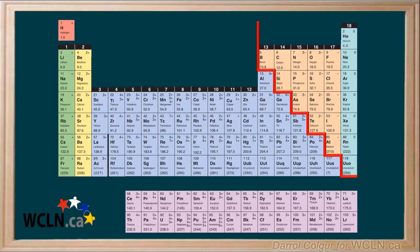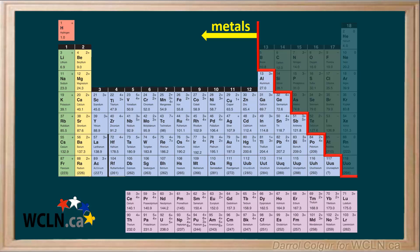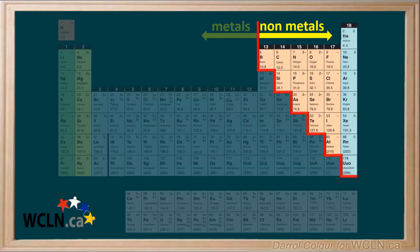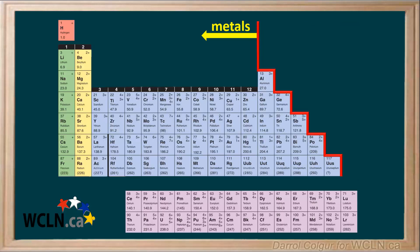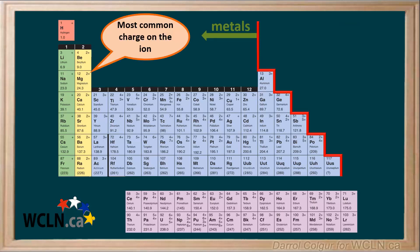Here it is. First of all, notice it has a staircase from the left of boron to the bottom of element 118. All elements to the left of this staircase are metals, and all elements to the right of it are non-metals. If we take a closer look at the metals, we can see the little number on the top right of each box. This gives us the most common charge of the ion formed by the metal.